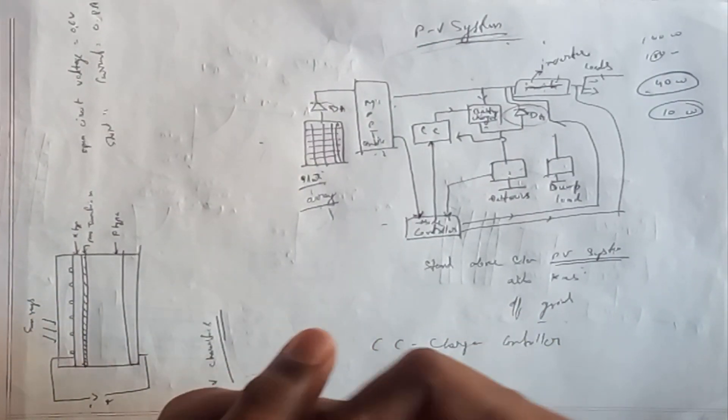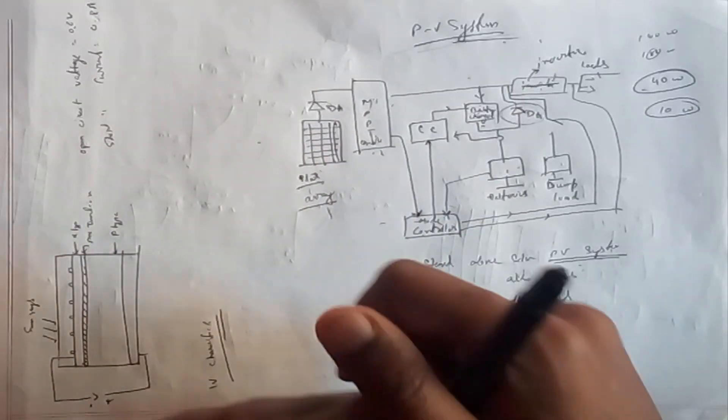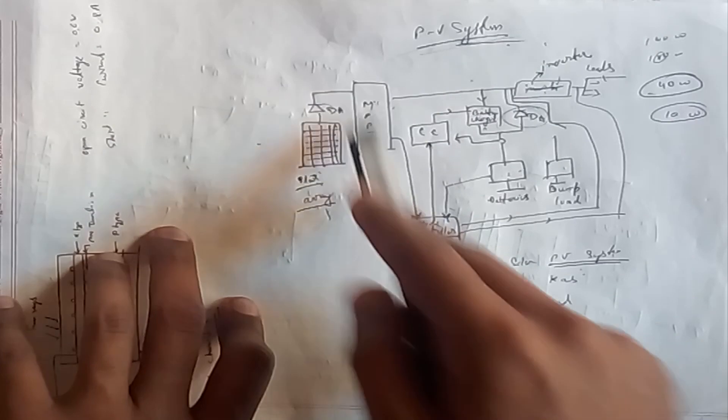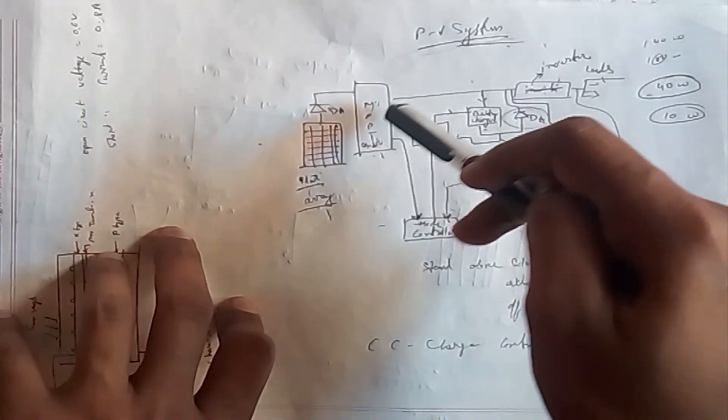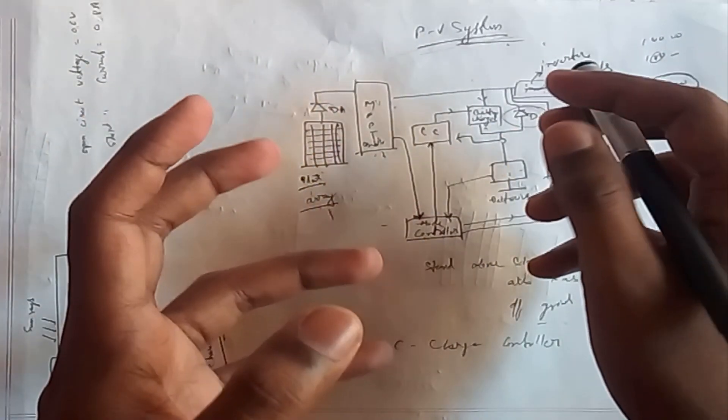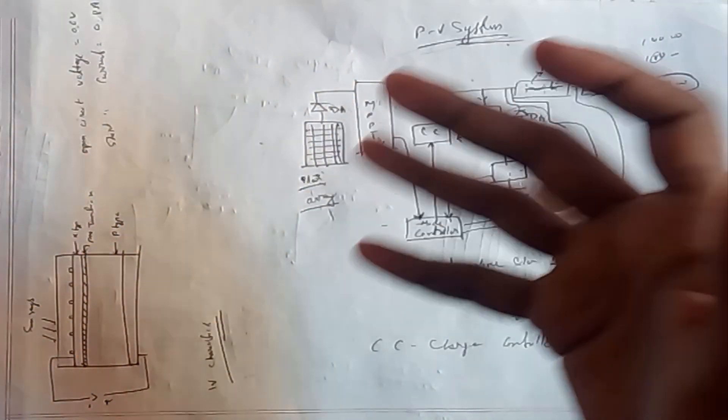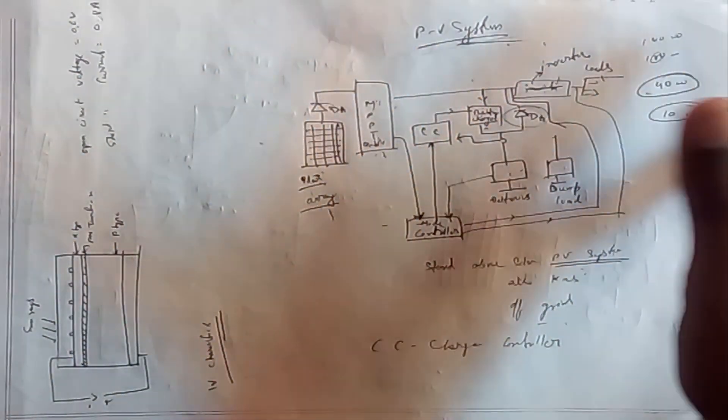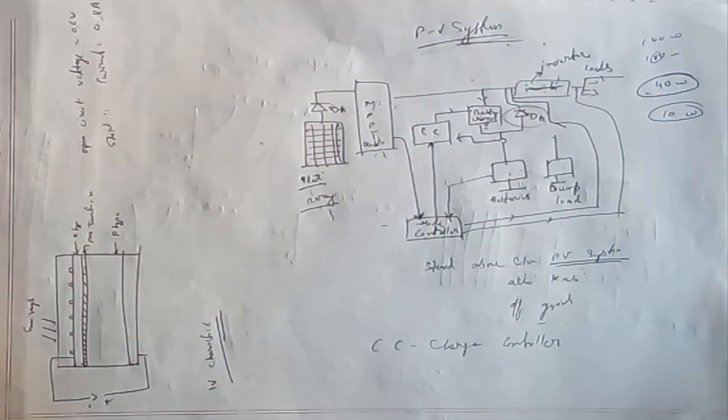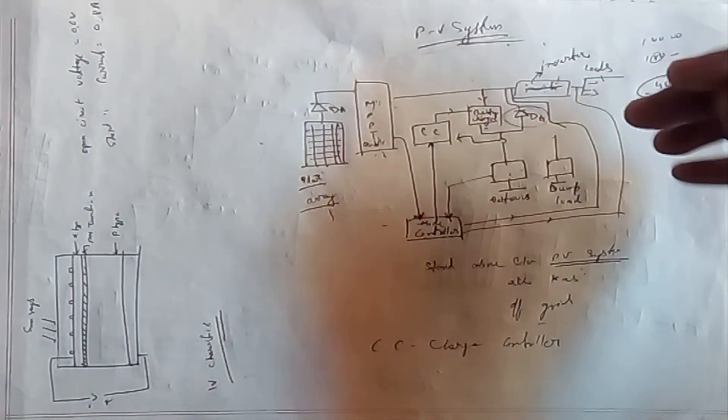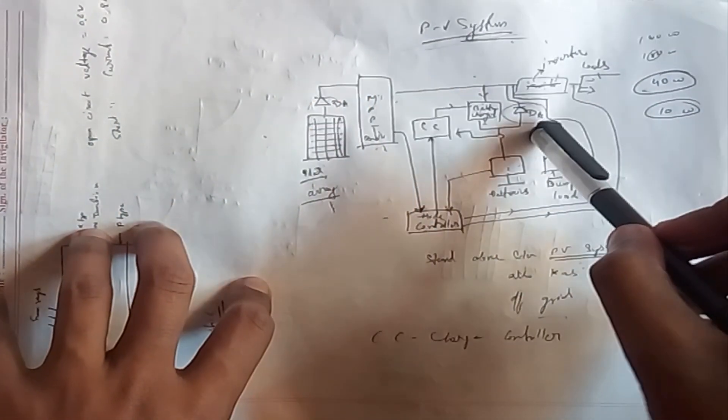What's happening here is the solar array is giving the power to the MPPT. The MPPT takes the voltage and current input and output, and from that it extracts the maximum power it can get. The MPPT controller's main work is to extract the maximum power, and then it feeds the power to the inverter.